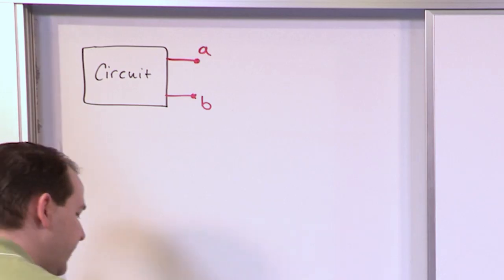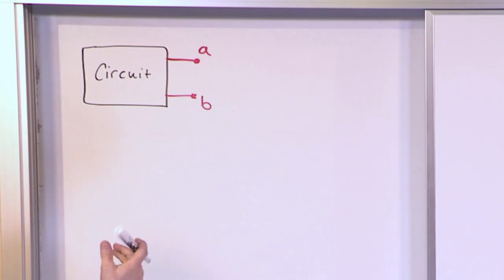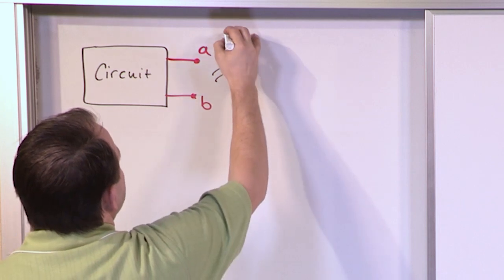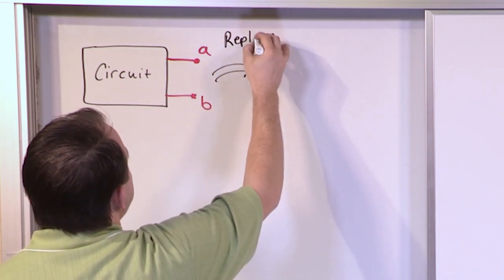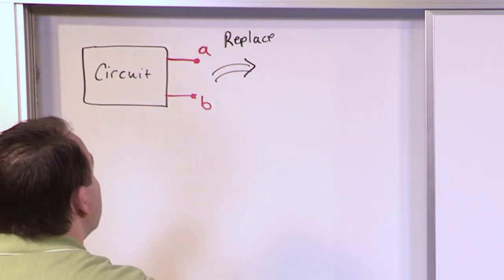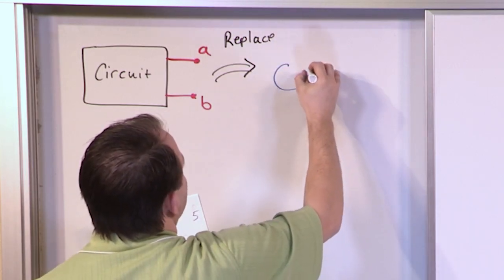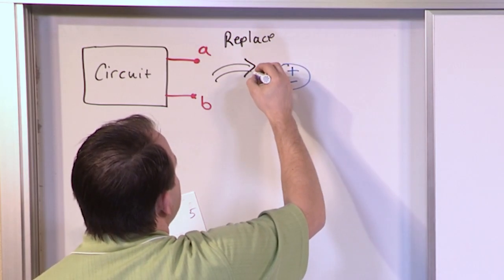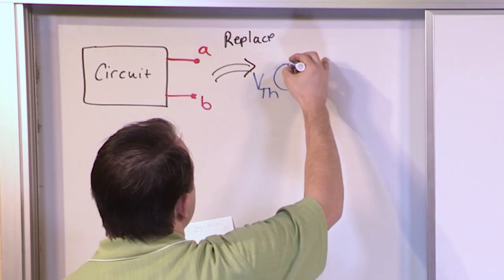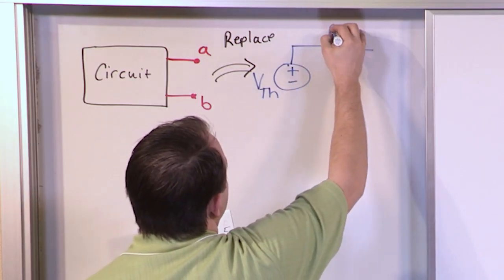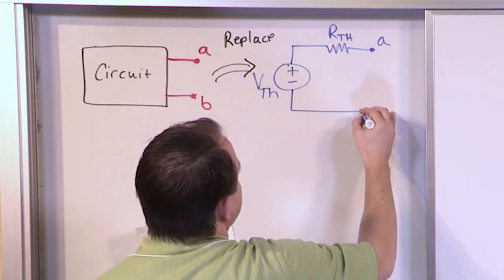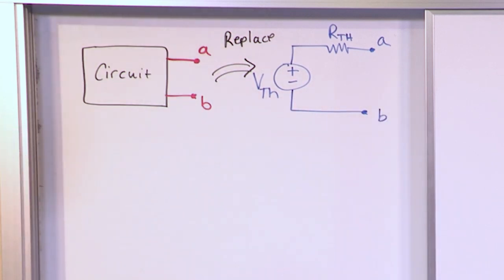What the Thevenin Equivalent Theorem says is that I can replace this — it doesn't matter what's in the box — I can replace the whole enchilada with a voltage source that I call the Thevenin voltage source, VTH, in series with a Thevenin resistance, RTH. Terminal A comes out of one end, and terminal B comes out of the other.